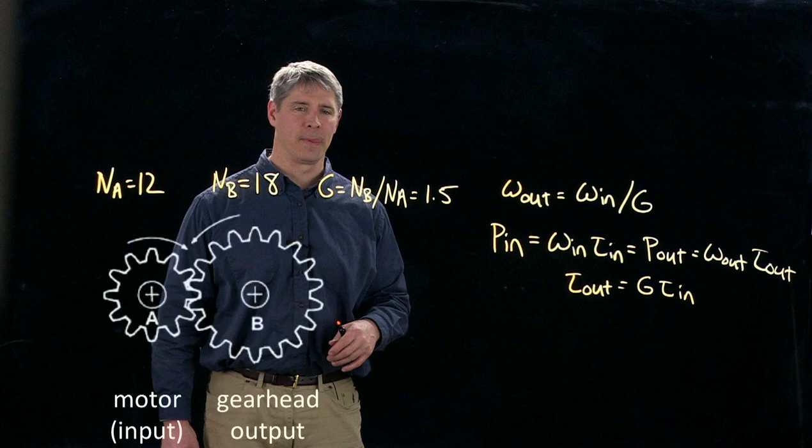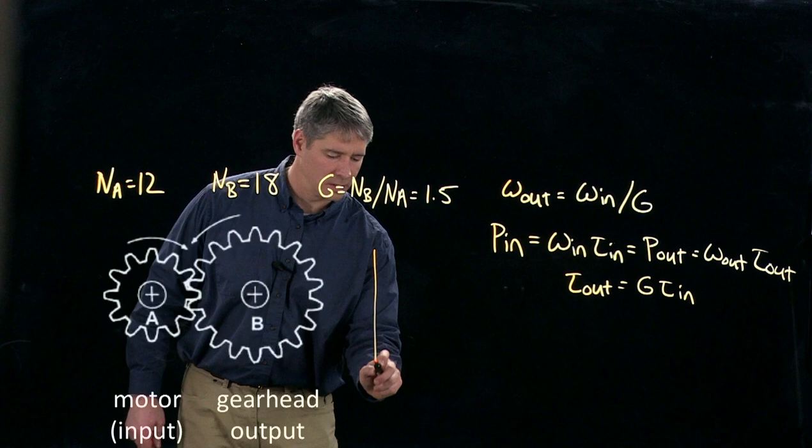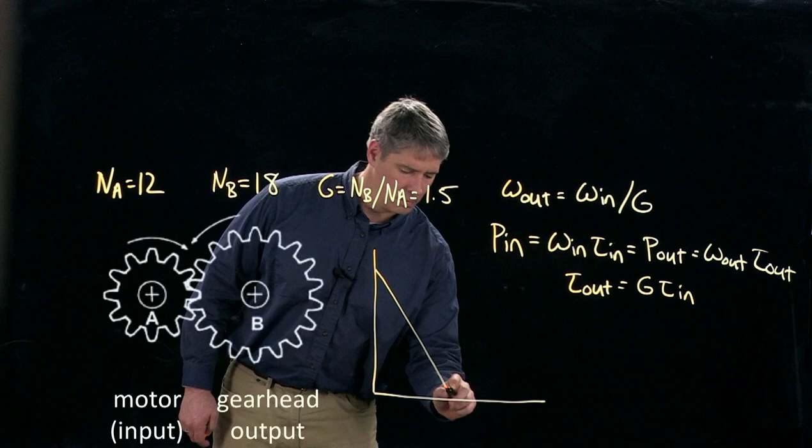Now, if we were to draw the speed torque curve for the motor by itself, it would look something like this. It would have a no load speed and stall torque.